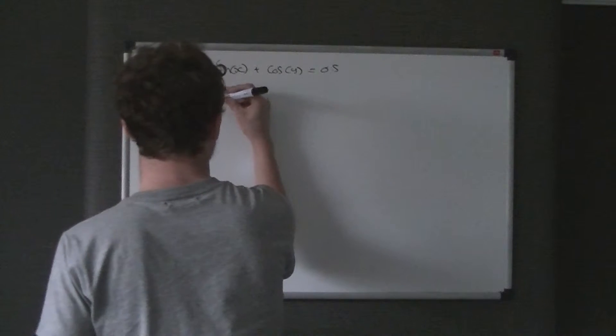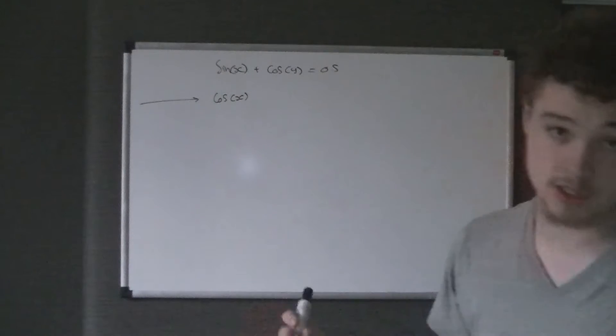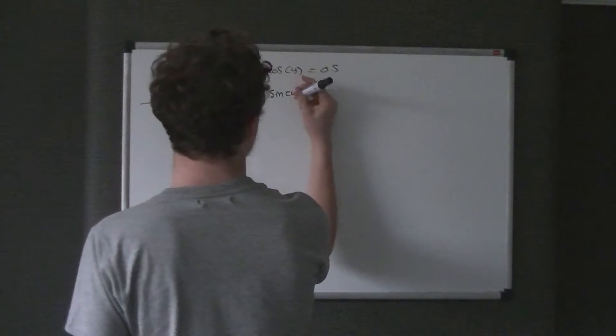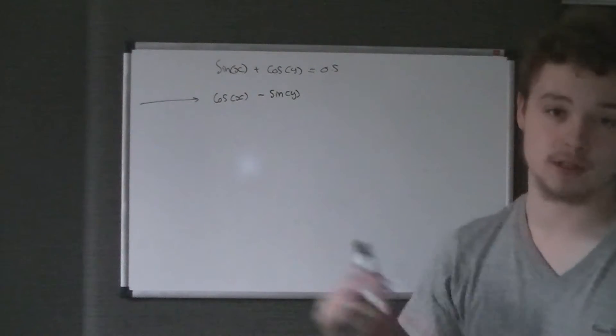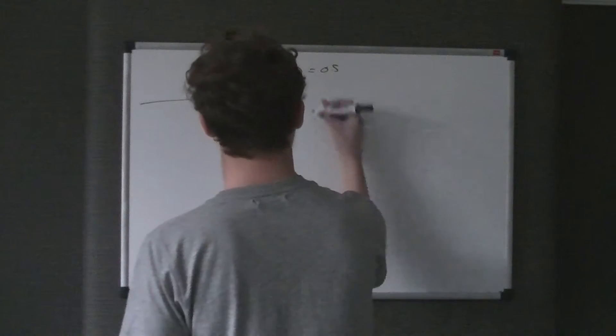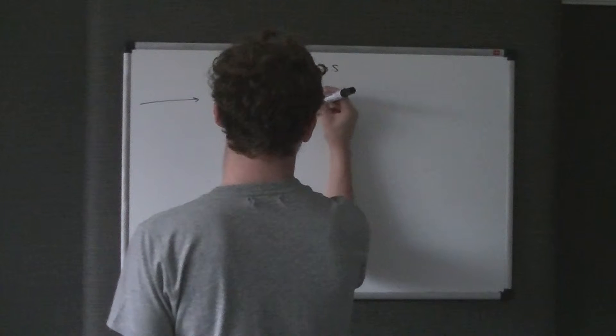When we differentiate sine, it changes to cosine — the sign doesn't change. But when we differentiate cosine, it changes to a negative sine. Remember, as cos y is a function of y — just as sin x is a function of x — when we differentiate a function of y, we have to put dy/dx next to it.